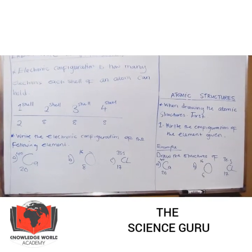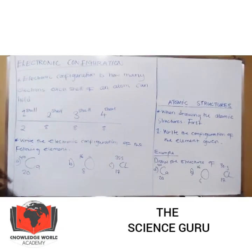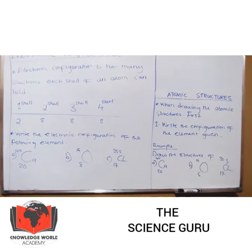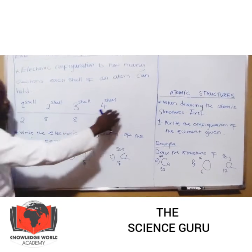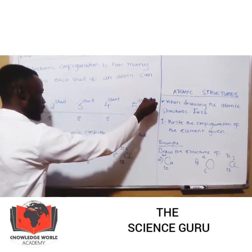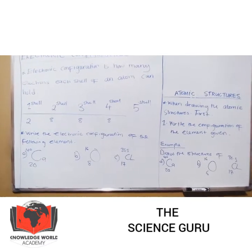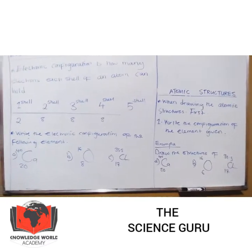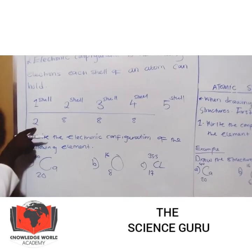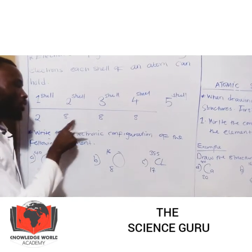So, what does the word electronic configuration mean? This is just how many electrons each shell of an atom can hold. So if we have four shells of an atom, or we can go up to the fifth shell of an atom. And you are being taught to write the configuration of that atom. The rule is simple: the first shell of an atom can only hold up to two electrons. The second shell of an atom can only hold up to eight electrons. The third shell, eight.